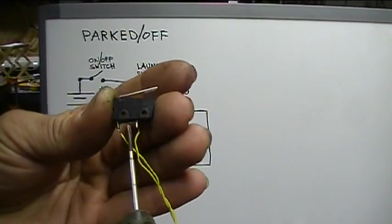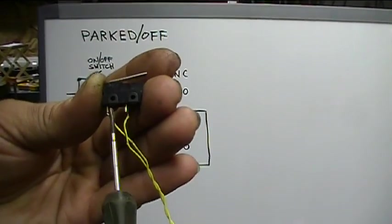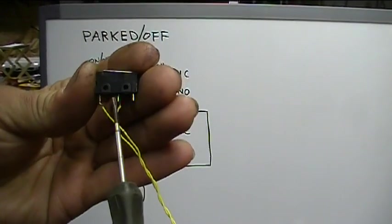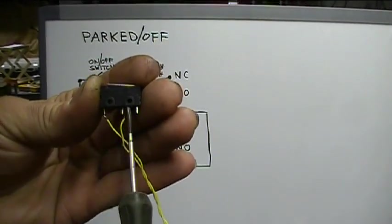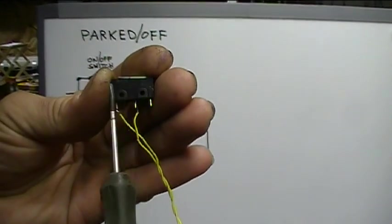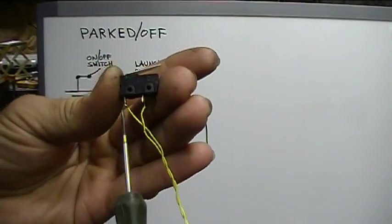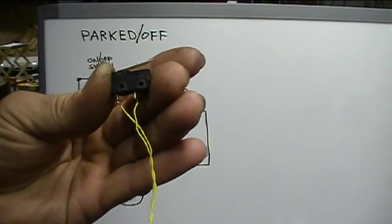There it is, open. Continuity between these two, the normally closed and the common. Acted upon, continuity between these two, the normally open and the common. Right now it is not in the normal position, so that's the one that has continuity with the common. Now it's in the normal position. The normally closed has continuity with the common. There you go. That's the basics on micro switches.